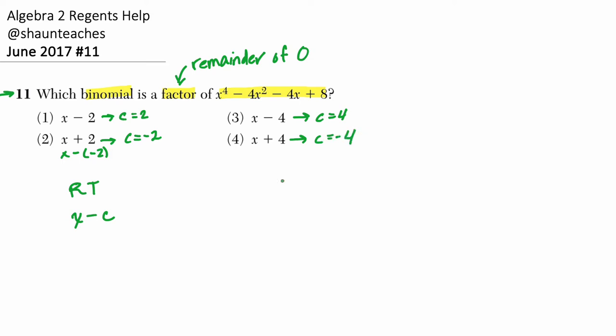I'm just identifying what c would be if we're looking at a binomial in this form. Well, the remainder theorem says that if you're dividing specifically by a linear binomial, so there's no powers, the coefficient of x is 1, and you're just subtracting some positive or negative number, then the remainder is equal to P of c.